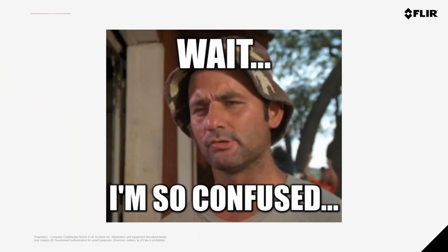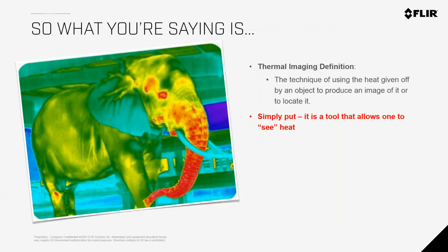Simply put, thermal imaging is a technique of using heat given off by an object to produce an image of it or to locate it — it's a tool that allows us to see heat, because our human eyes cannot see in the IR spectrum. For example, looking at a thermal image of an elephant, you can quickly see the trunk is probably hotter than the rest of the body, the ear is a little cooler, and there's something going on near what might be a knee. Point your camera at objects and it gives you a picture of the heat of those objects.